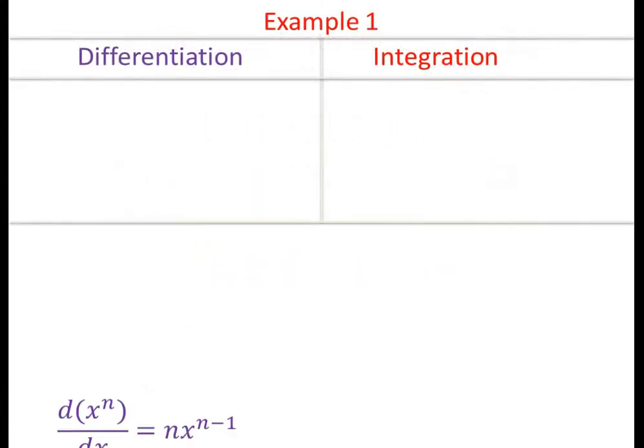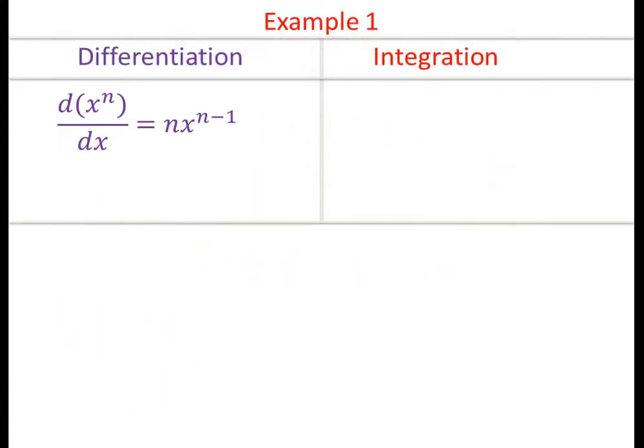Example 1: The derivative value of x^n is equal to n·x^(n-1). On the other hand, the integrated value of x^n is equal to x^(n+1) divided by (n+1) plus c.